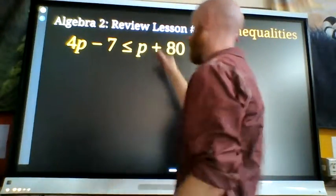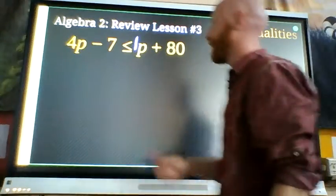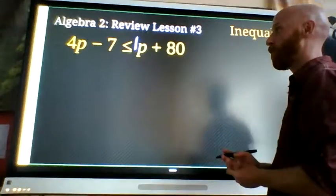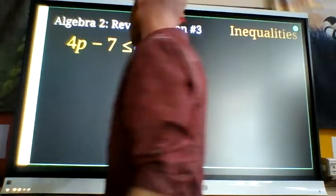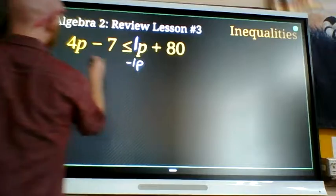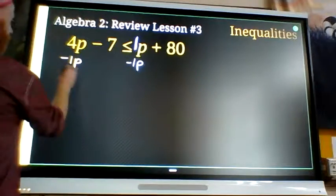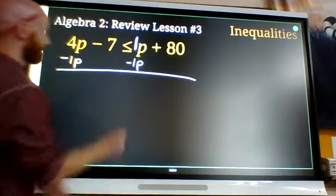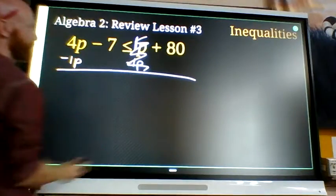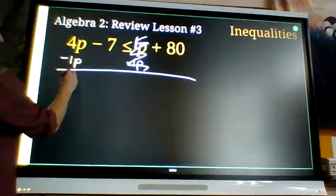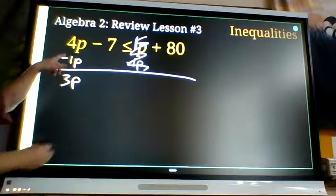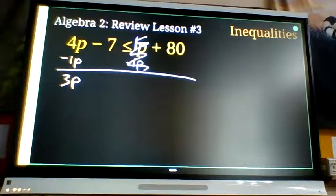So I got a variable on each side. Remember p by itself, the coefficient is an understood 1. I'm going to subtract 1p from both sides so that I can get rid of this. 1p minus 1p is 0 and I can end up balanced subtracting it from both sides. 4p minus 1p is 3p.